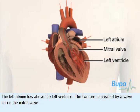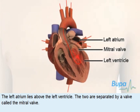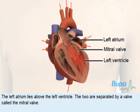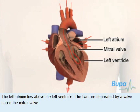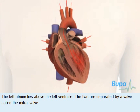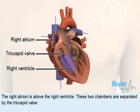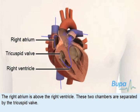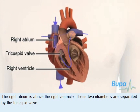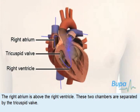The left atrium lies above the left ventricle. The two are separated by a valve called the mitral valve. The right atrium is above the right ventricle. These two chambers are separated by the tricuspid valve.